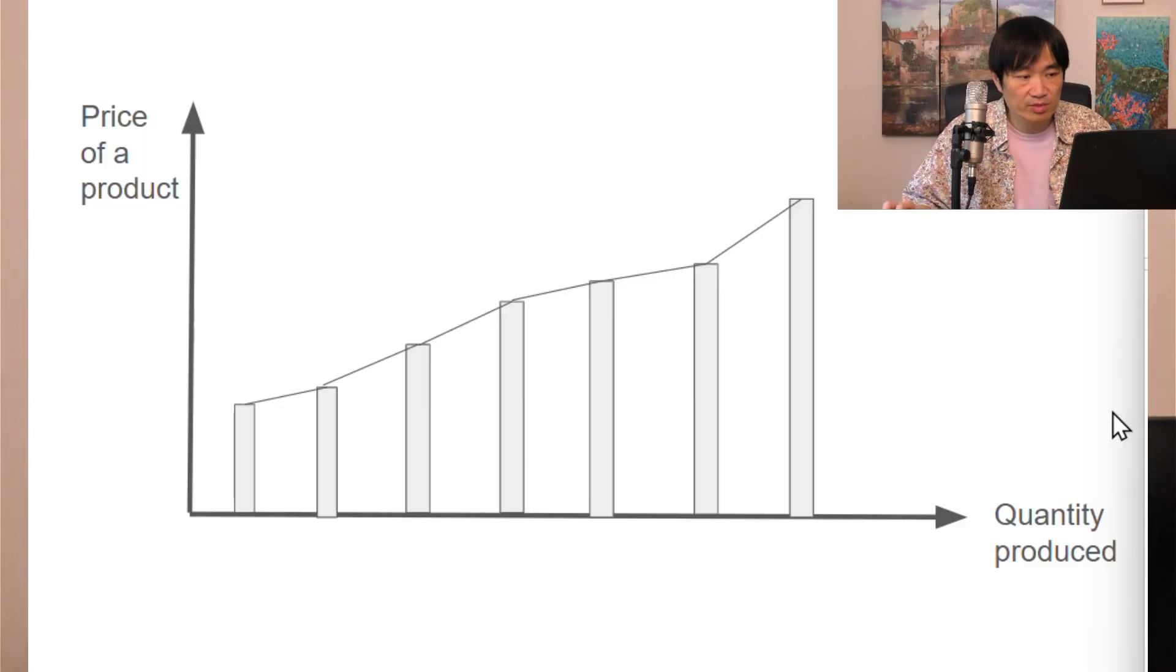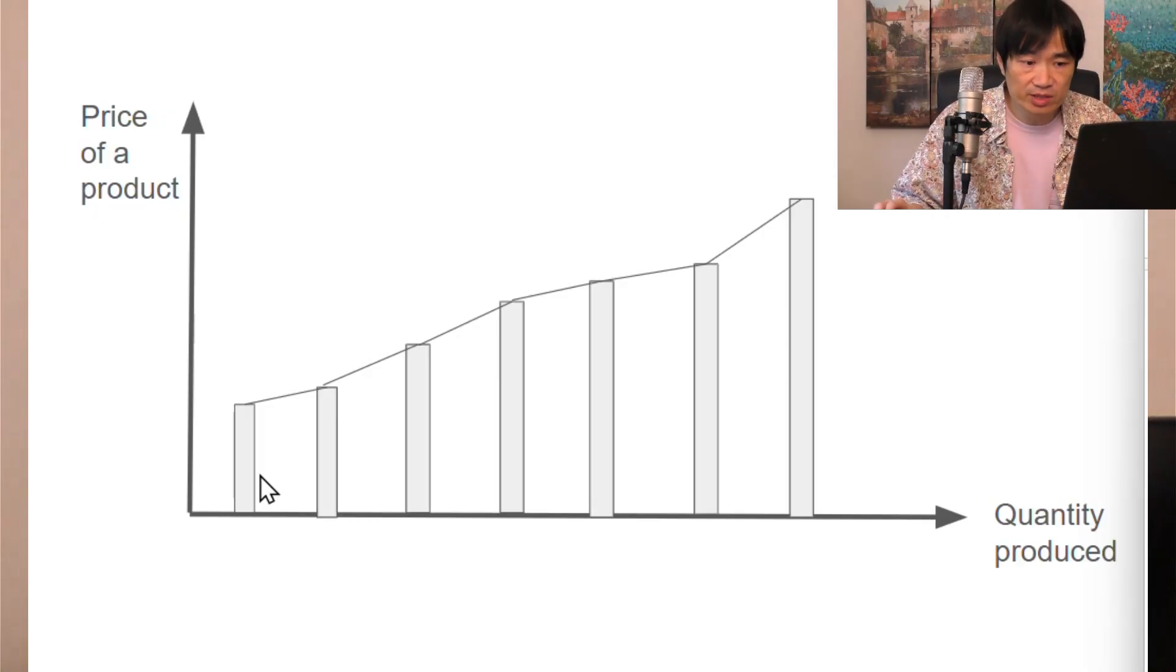Obviously not every unit costs the same. Some producers may be more efficient, and some producers may have better access to materials. Some producers may have access to cheap labor. So the production cost of each unit is different. Let's just rank them from the least costly unit to the most costly unit.